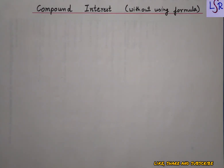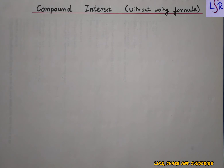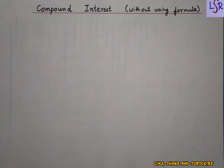Hello everyone. Here we are going to start with a new chapter: compound interest, and that too without using a formula. We very well know that interest is the amount which we pay as an additional amount when we borrow some money from others, and it may also be the amount which we get when we lend some amount to anyone. We have studied simple interest in our previous classes, and here we have compound interest. Let's see the difference between simple interest and compound interest.